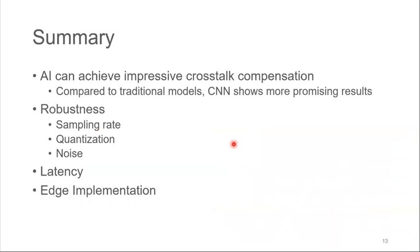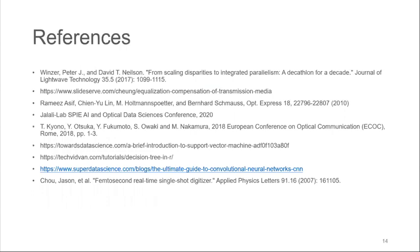To summarize this talk, first, we proved that AI can achieve impressive crosstalk compensation for WDM communication. And compared to the traditional models, the CNN shows more promising results. We evaluated the robustness of AI. It shows that for sampling rate, we need oversampling, which can be resolved by our time stretch technology. And the AI can work with 3 to 4 bit quantization, and the SNR needs to be higher than 20. We compared the latency of the algorithms and showed that the CNN can achieve higher accuracy with higher latency. But generally speaking, our network is pretty light. It's only four layers. So making it much easier to implement on edge devices, such as the FPGA or ASIC. And here are the references. And thanks for coming. I'm open for questions.